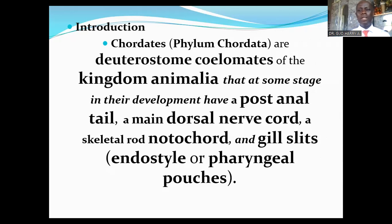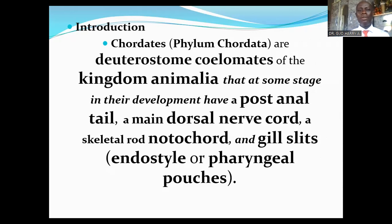The coelomates are organisms that possess a body cavity. Chordates are also bilaterally symmetrical — they possess bilateral symmetry, so they belong to the group of animals called Bilateria.